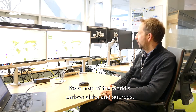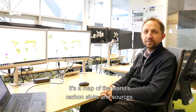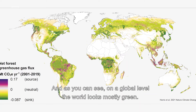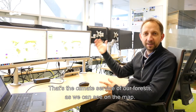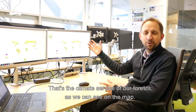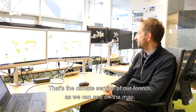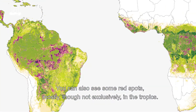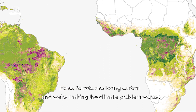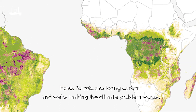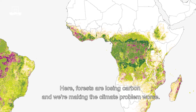It's the map of forest carbon sinks and sources. At the global level it looks mostly green, and green means forests are taking up carbon — that's the climate service of the forest. We also see some red spots, mostly in the tropics, and these are areas where forests are losing carbon. That's where we are making the climate problem worse.